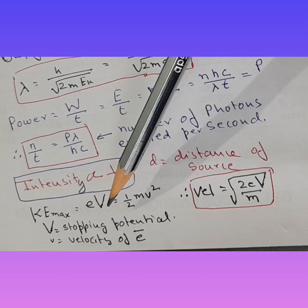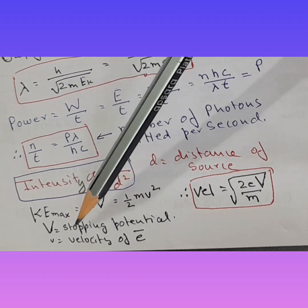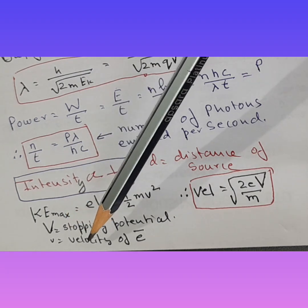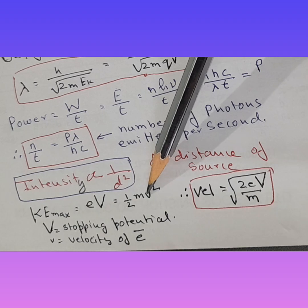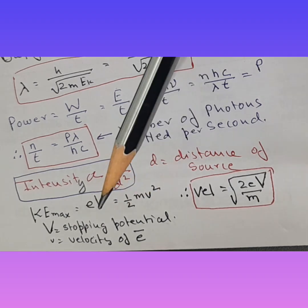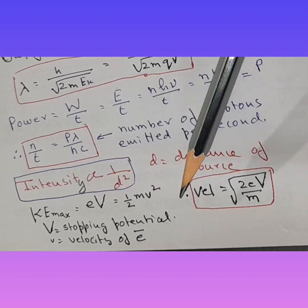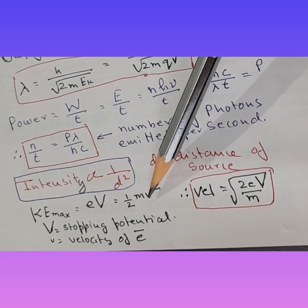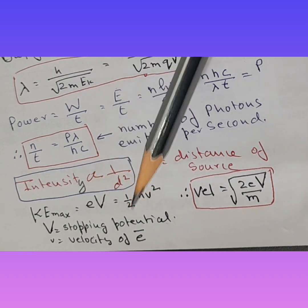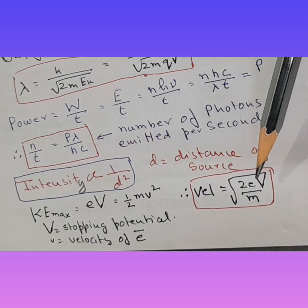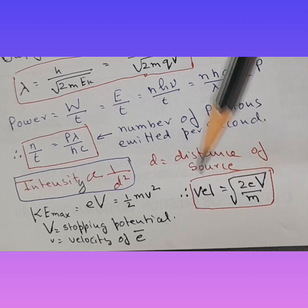So where V is stopping potential and the small v is velocity of electron. The formula we intend to find for velocity, it would be taking things, keeping velocity this side and taking everything on the other side would be root 2 eV over m.